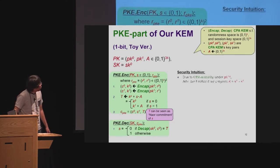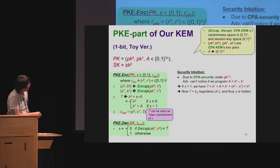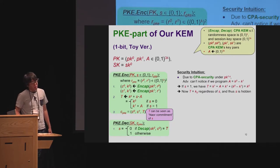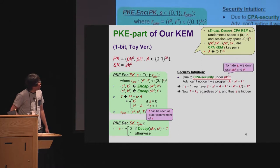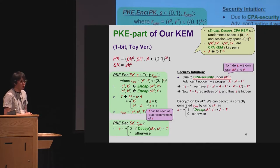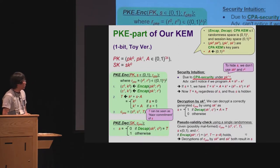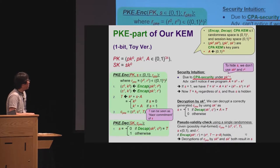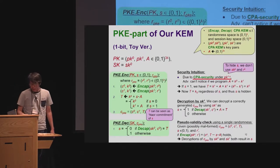By using the security under this public key, we can perform a security proof similar to the Naor commitment — specifically equivocability — to show that the information of S can be hidden. We also have another decryption procedure using SK_1, and the pseudo-validity checking property ensures that decryption using SK_0 and SK_1 yields the same value, essentially because of the binding of the Naor commitment.